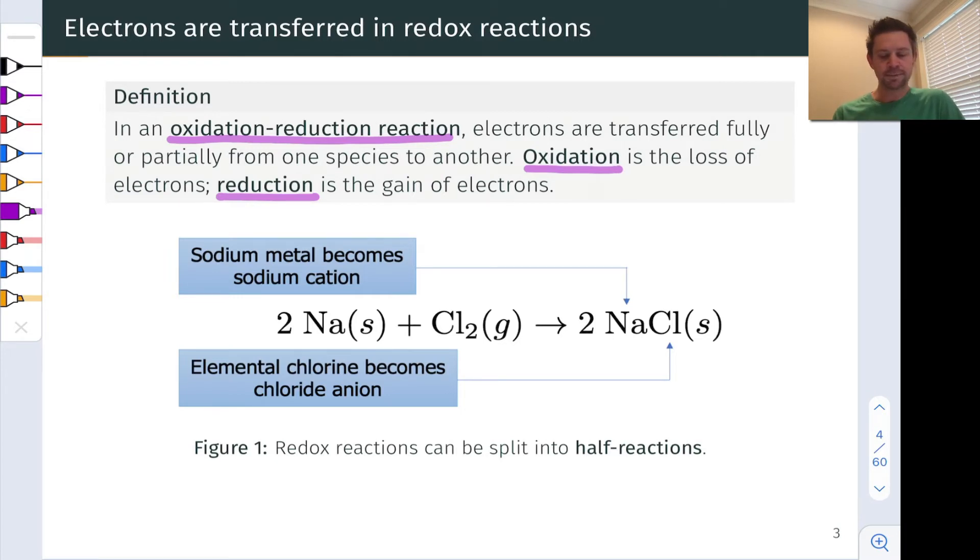Notice here that sodium metal becomes sodium cation. This is an oxidation process. Sodium starts out in zero oxidation state. We'll talk about how to determine this on the next slide. And in NaCl, sodium is in the plus one oxidation state, and so the oxidation number has increased. This is oxidation.